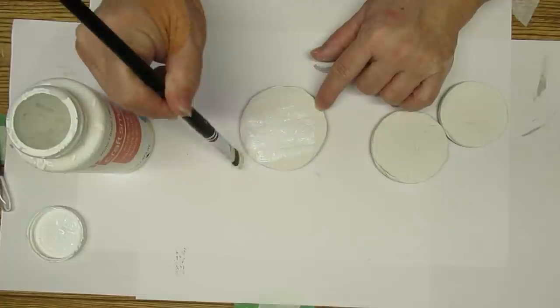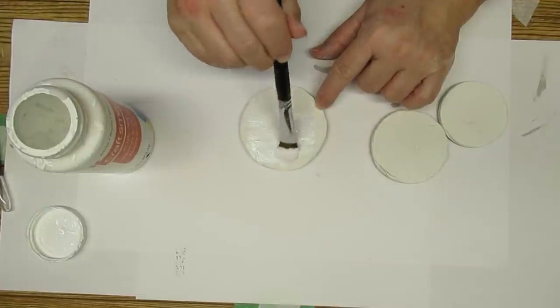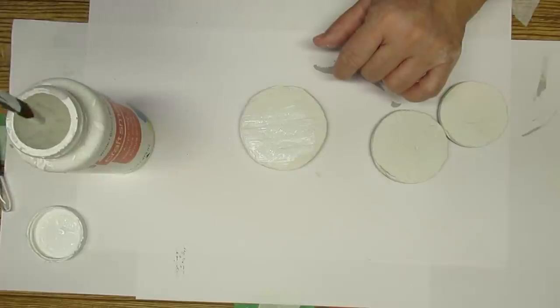I'm just taking some DIY chalk paint in white and I'm giving all of the lids, including the sides, one coat.